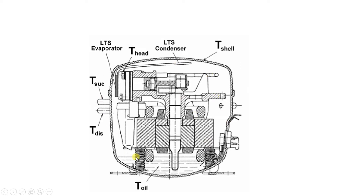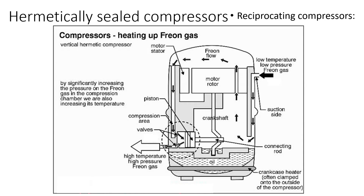This is the actual latest model of the hermetically sealed compressor. Advantages of hermetically sealed compressors: leakage of refrigerant is prevented because suction and discharge are all inside the welded shell, making it leak proof. Since both motor and compressor are inside the shell, noise is less. It requires small space due to compactness, and lubrication is simple.